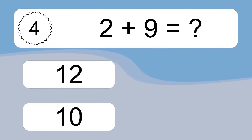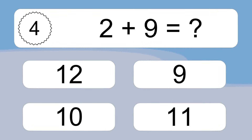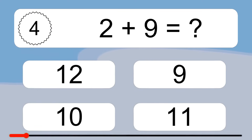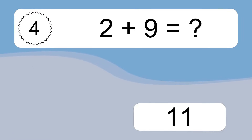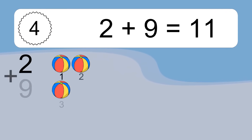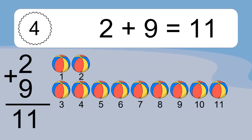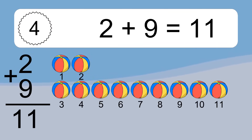2 plus 9 equals what? 2 plus 9 equals 11. Let's count it: 1, 2, 3, 4, 5, 6, 7, 8, 9, 10, 11.